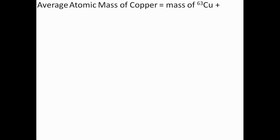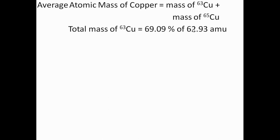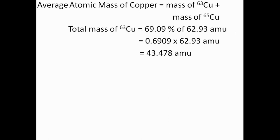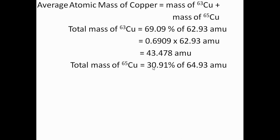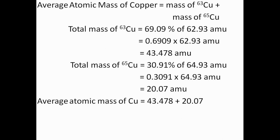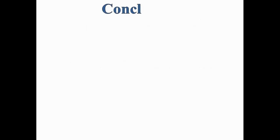The average atomic mass of copper equals the mass contribution of copper-63 plus the mass contribution of copper-65. The total mass of copper-63 is 69.09% of 62.93 AMU, giving 43.478 AMU. The total mass of copper-65 is 30.91% of 64.93 AMU, giving 20.07 AMU. The average atomic mass is the sum of these two values: 63.55 AMU, which matches the periodic table value.